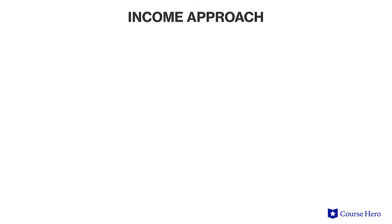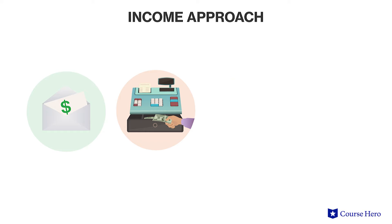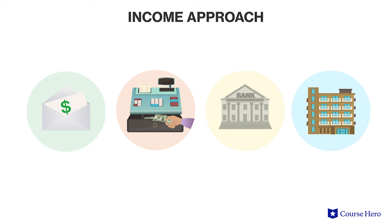Sources of income used in the calculation include not only wages but also profits, interest earned, and rent collected. Wages here include contributions by employers to pensions, retirement savings, insurance, and other benefits, as well as income earned by those who are self-employed.